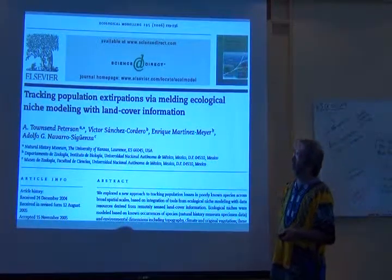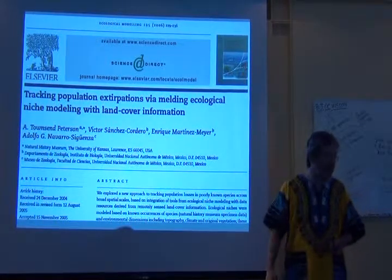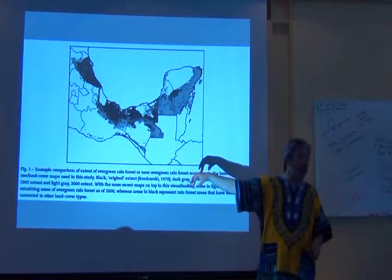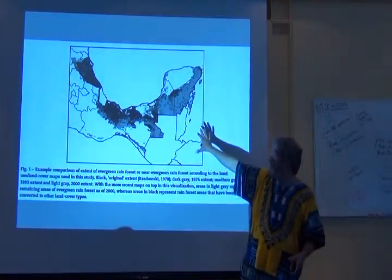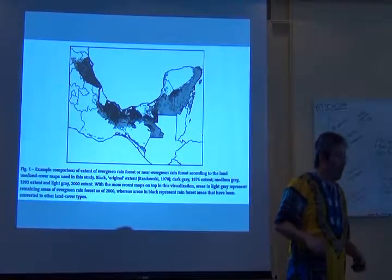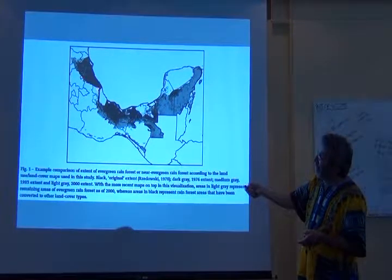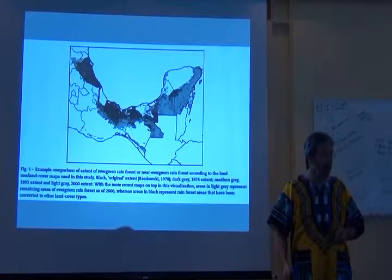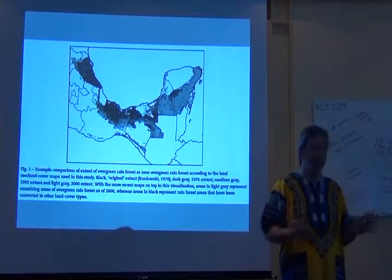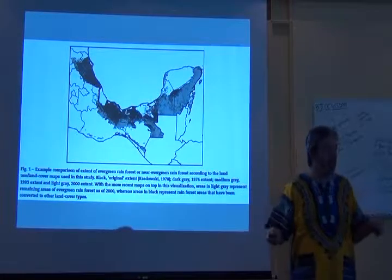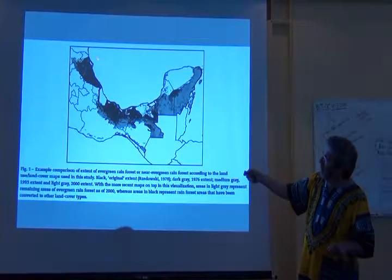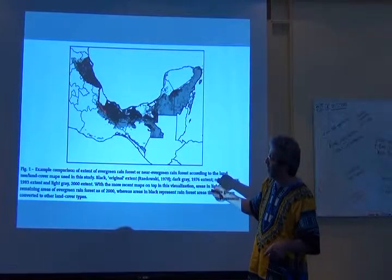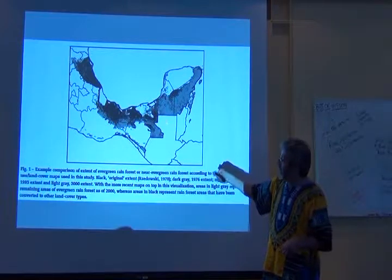This is an early publication — early means 2006. Essentially we looked at this phenomenon. Everywhere you see gray or black is lowland rainforest in southern Mexico. Originally it covered all of this, and a little bit here in southern Chiapas. But everywhere where you see black, that rainforest has been lost. Essentially all of the rainforest in Veracruz is gone, and really the only places where you have retention are the Chimalapas region and northeastern Chiapas.